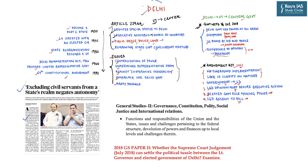Delhi happens to be a union territory, and union territories are totally controlled by the central government. But Delhi is a little more special because it's a union territory with a legislative assembly and an elected council of ministers headed by a chief minister — so it's not like Chandigarh or Andaman and Nicobar or Lakshadweep. To understand why there is always a tussle between the Delhi government and the central government, we have to understand the constitutional development of Delhi and the constitutional provisions, including the 2021 amendment to the NCT of Delhi Act.